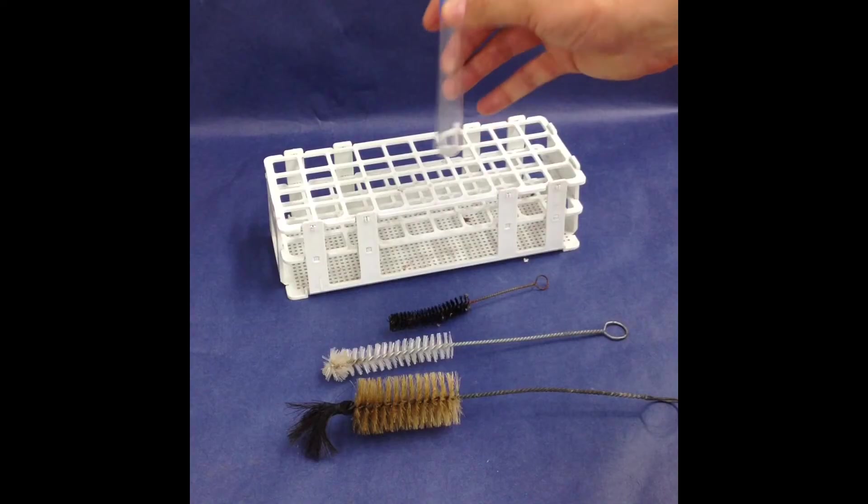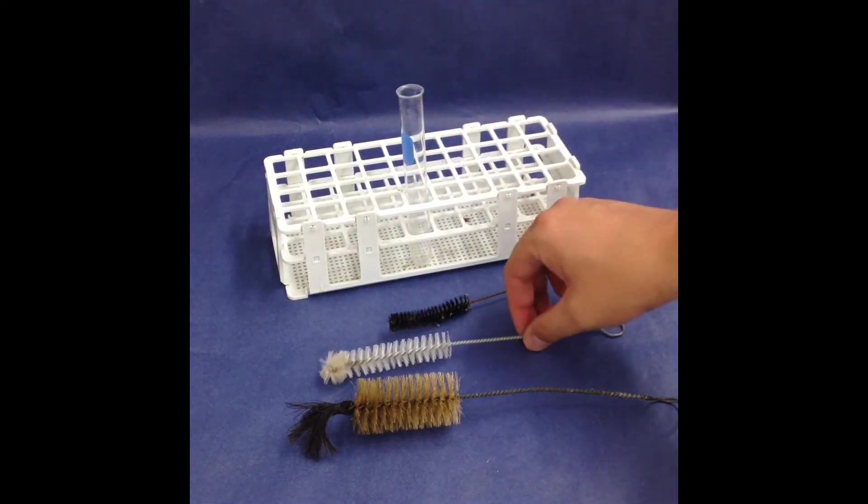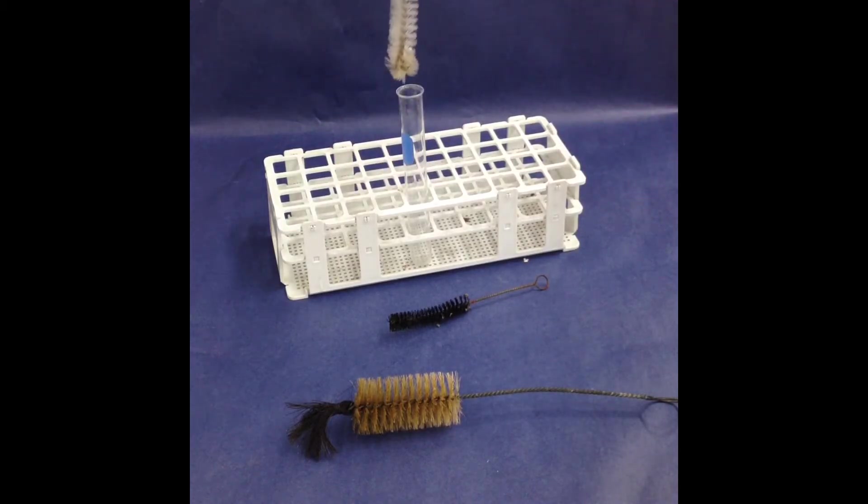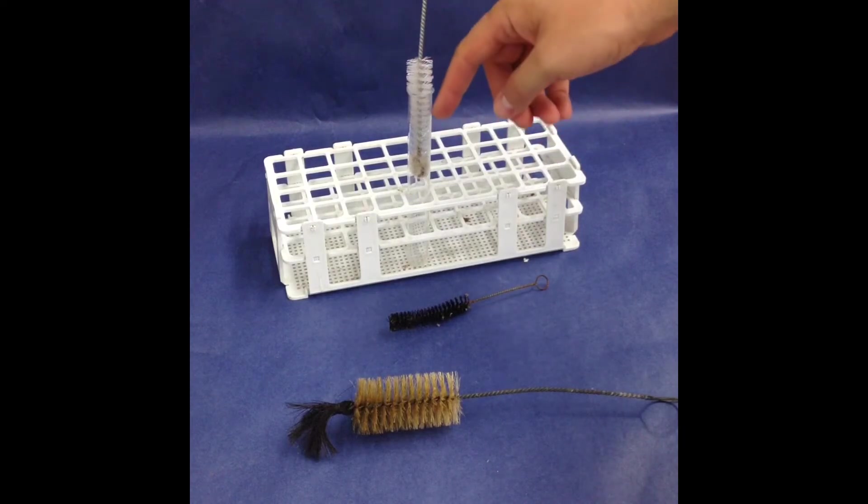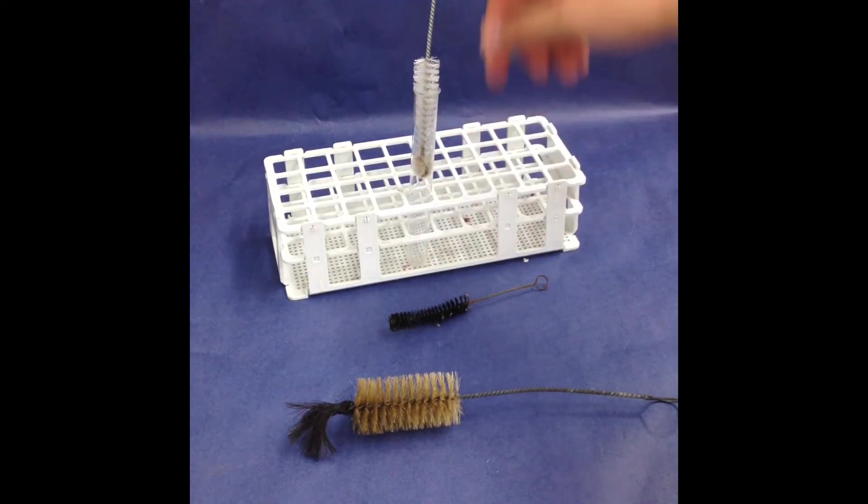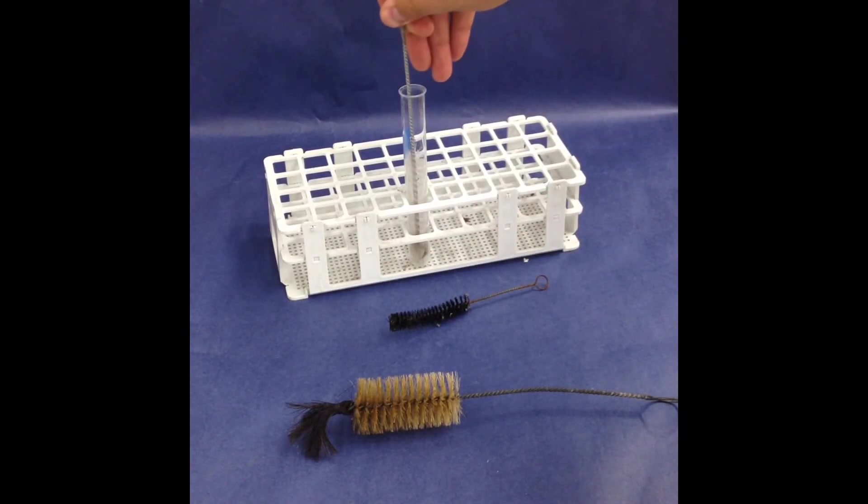That's usually where the solids are going to accumulate. You want to choose something of appropriate size so that way it fits inside the test tube, but it does brush nicely against the sides and it will reach all the way down to the bottom of the test tube.